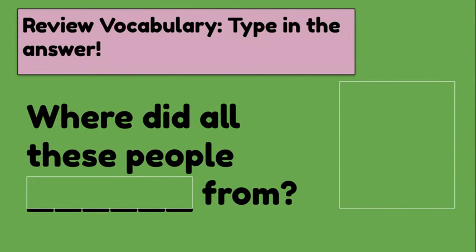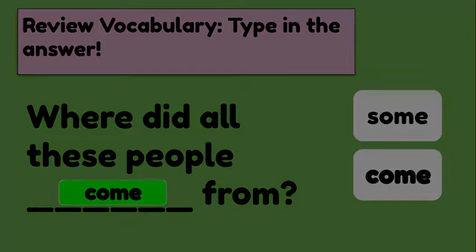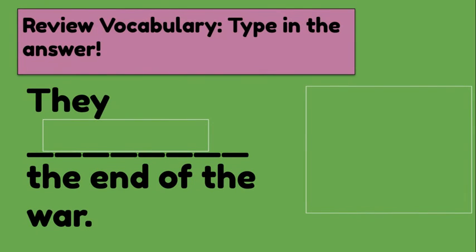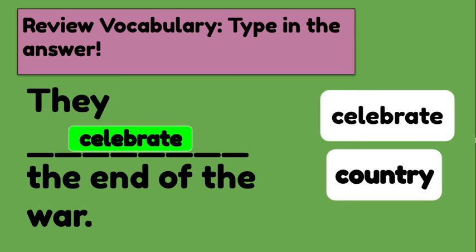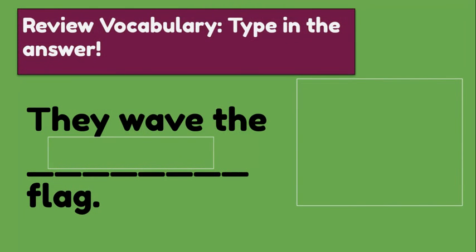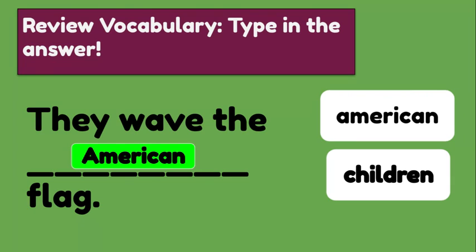Now we're going to review some vocabulary that we already know and decide which word goes in the sentence. Where did all these people come from? They celebrate the end of the war. They wave the American flag. We're talking about the war and things that happened in the past — sentences someone might have said about World War II ending. They wave the American flag; they're celebrating and they're happy.